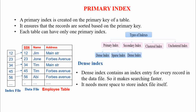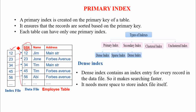A primary index is created on the primary key of a table. In this example, the employee table has SSN as the primary key, and the index file created for this table is on the SSN column — that is why this index file is known as a primary index file. Whenever a primary index is created, the records in the table are sorted on the primary key column values. You can see all the records are arranged as per the SSN column. Since each table can have only one primary key, there can be only one primary index created.